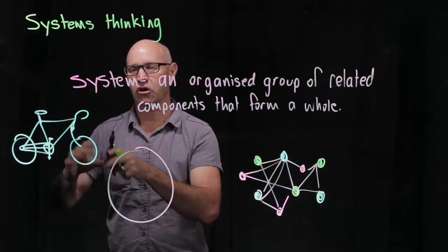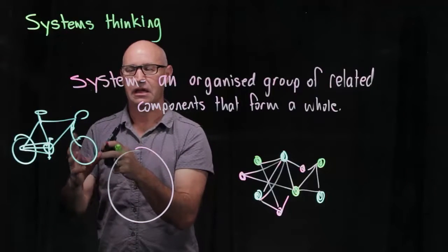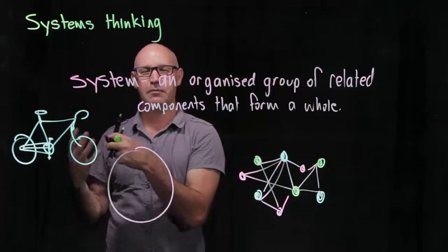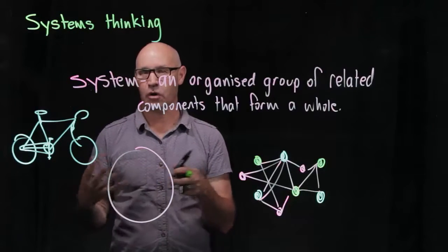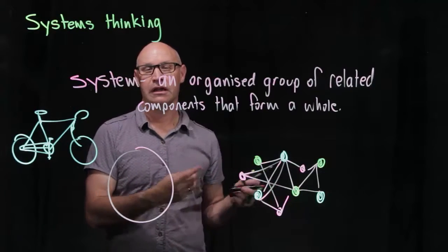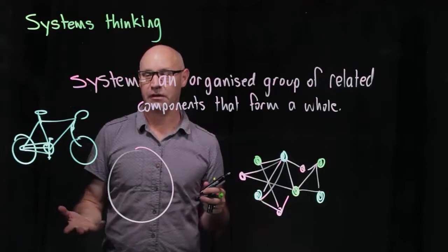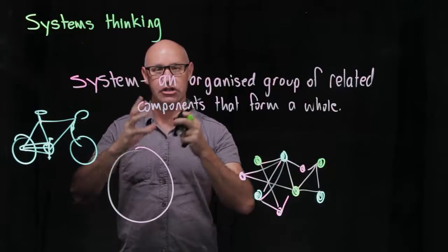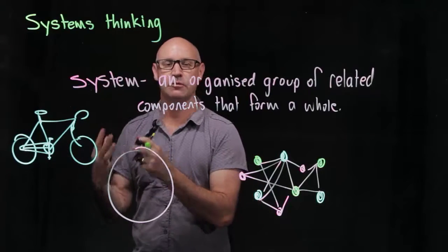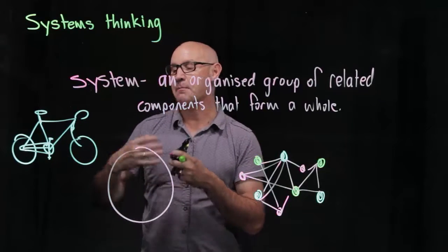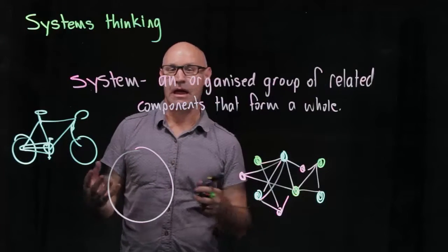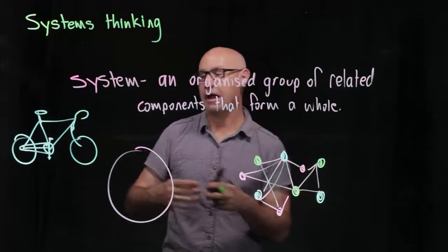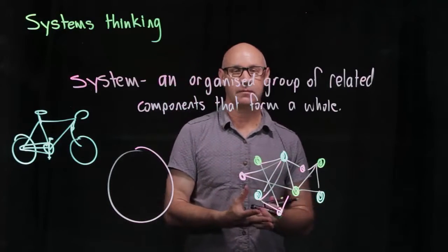But specialization of a system can allow this bicycle to do different things. For example, a commuter bike is quite different to a racing bike and it's different to a mountain bike. Now a bicycle can fit into a larger system as well, a transportation system, a mail delivery system, a food delivery system, an exercise and a recreation system.